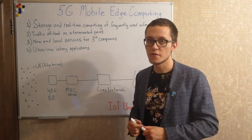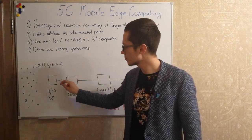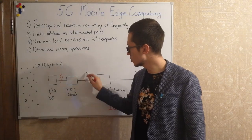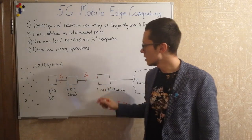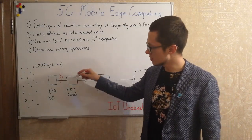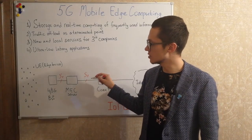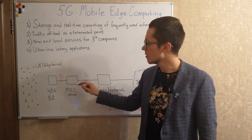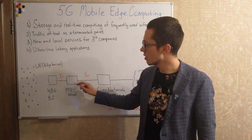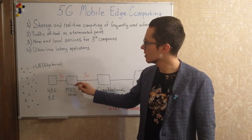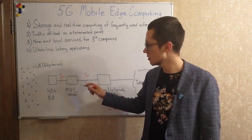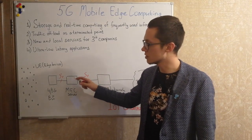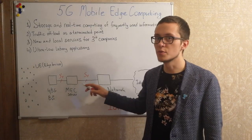It may be, for example, on the S1 interface. For some traffic that needs to be offloaded, this server may act as a terminated point — a terminated server where data is stored and computed.